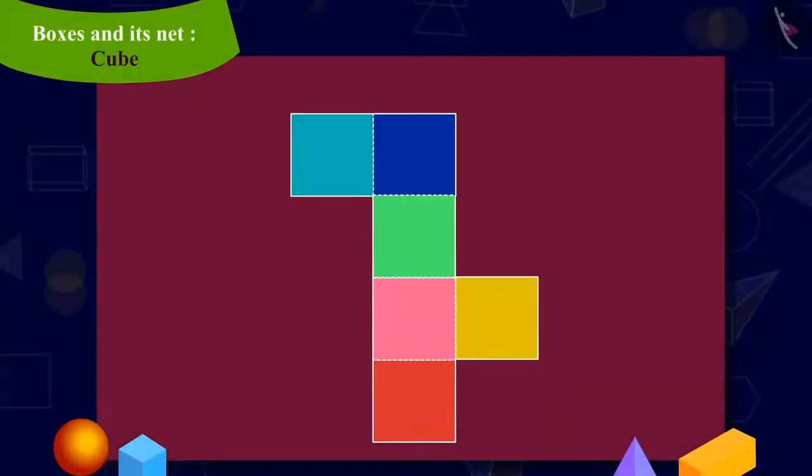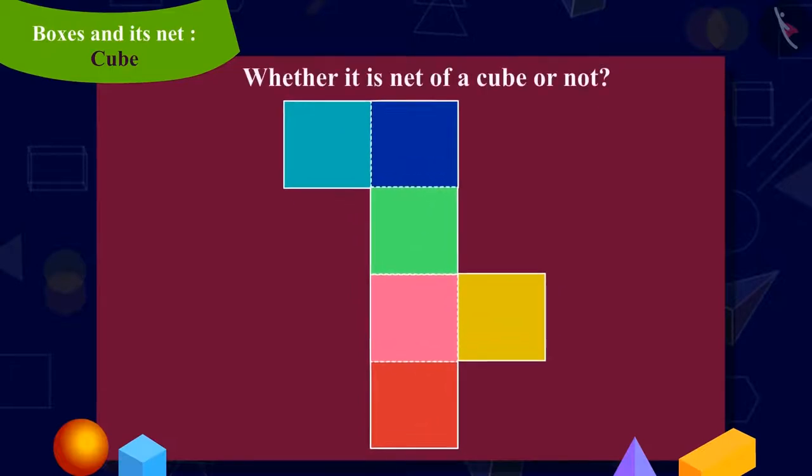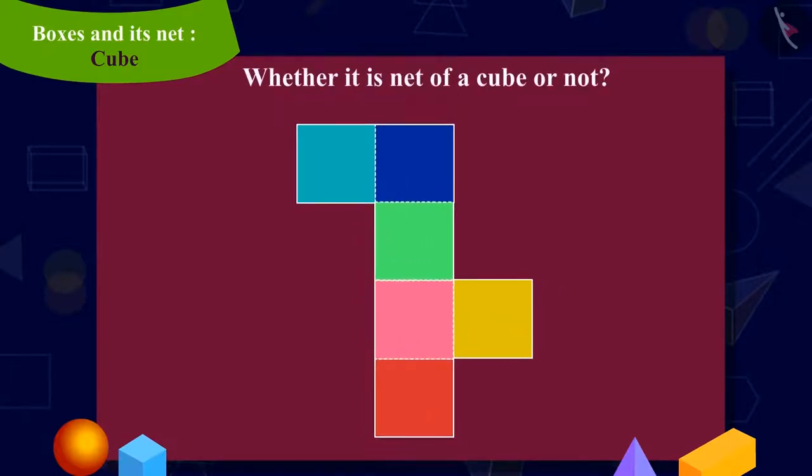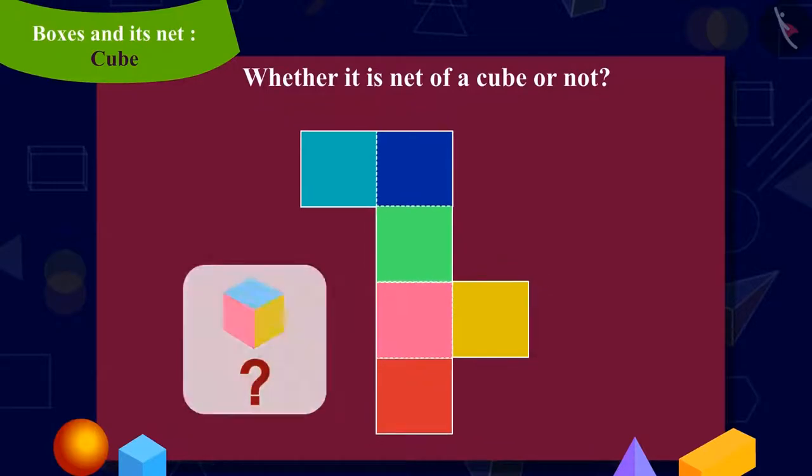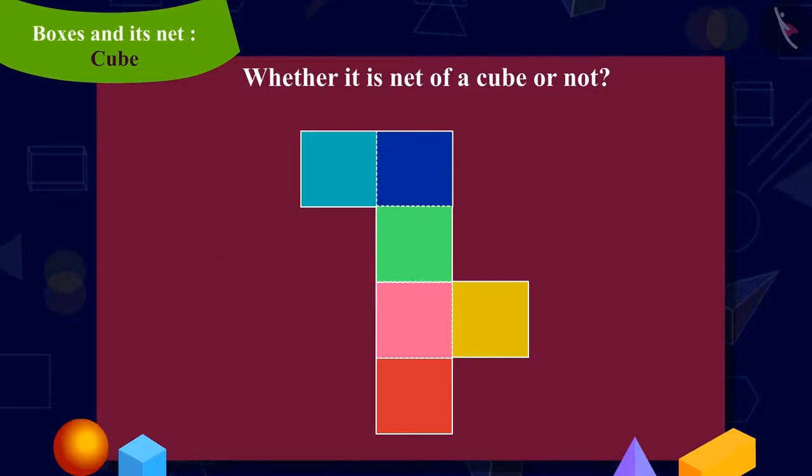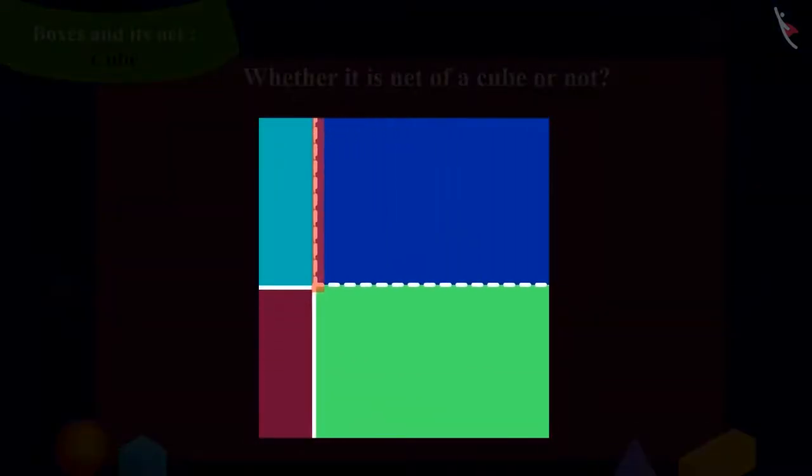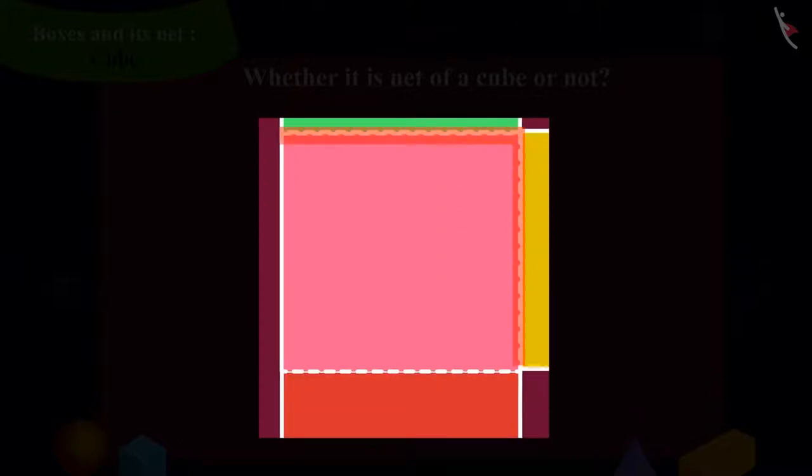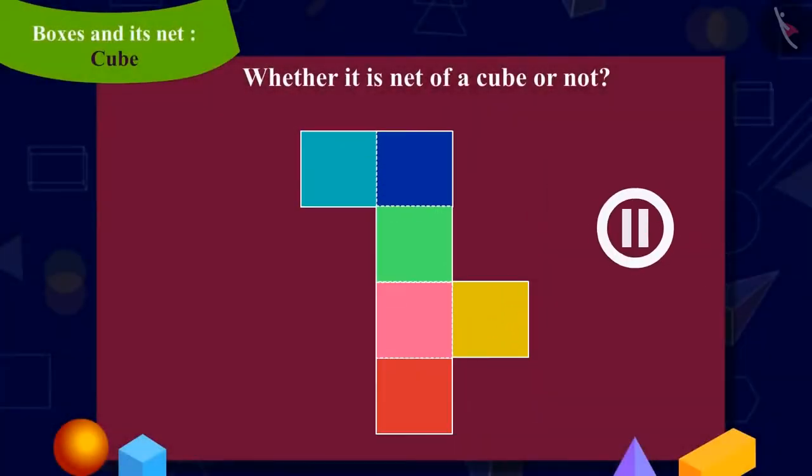Kids, can you look at this shape and tell whether it is a net of a cube or not? In other words, can we make a cube-shaped box by folding this shape on these dotted lines? You can pause the video to find the answer.